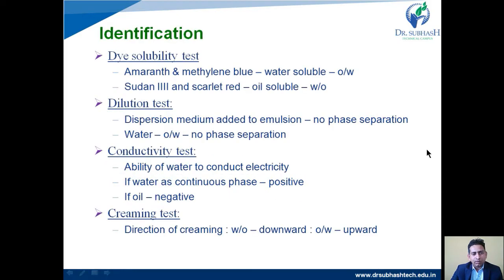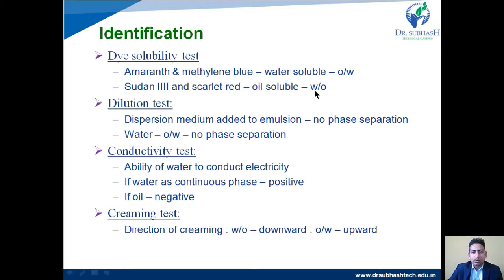For identification, we check whether an emulsion is oil-in-water or water-in-oil. The first test is the dye solubility test. Amaranth and methylene blue are water-soluble and give a blue color in water, so if added to an oil-in-water emulsion, a blue color confirms it is oil-in-water. Sudan III and scarlet red are oil-soluble and give a red color to a water-in-oil emulsion; absence of red color indicates oil-in-water.